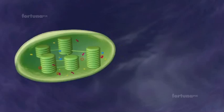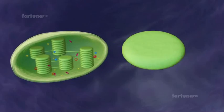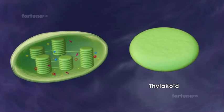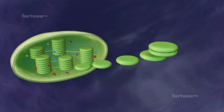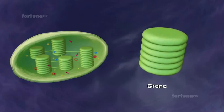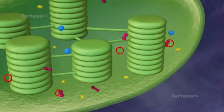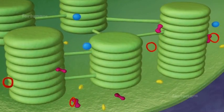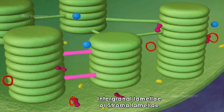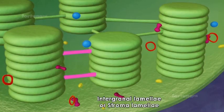Inside the stroma, there are membranes folded into discs called thylakoids, which are arranged in stacks called grana. Two adjacent grana are joined to one another by lamellae called intergranal lamellae or stroma lamellae.